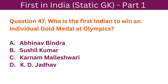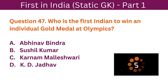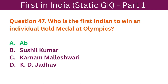Question 47: Who is the first Indian to win an individual gold medal at the Olympics? A. Abhinav Bindra. B. Sushil Kumar. C. Karnam Malleswari. D. K.D. Jadhav. The correct answer is A. Abhinav Bindra.